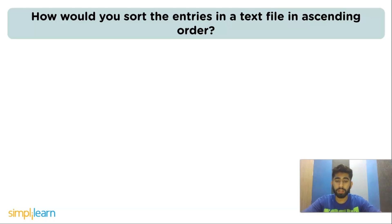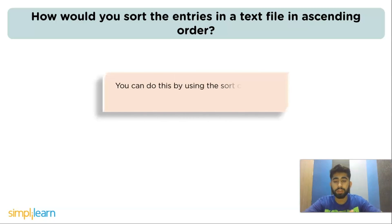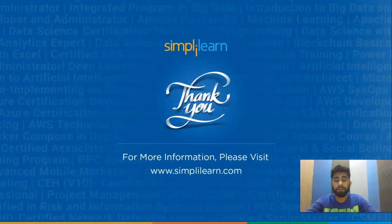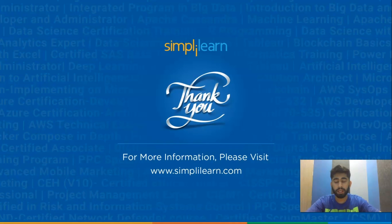The last question is: how would you sort the entities in a text file in ascending order? You can do this by using the sort command. Write: sort simple.txt — where simple.txt is the file name. You can replace it with the name of your file on which you want to perform the ascending order operation. With this we have reached the end of this video. Make sure to like and share it. Thank you for watching and stay tuned for more from Simply Learn.